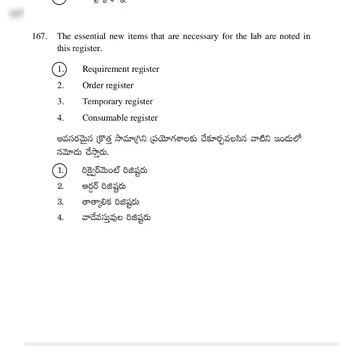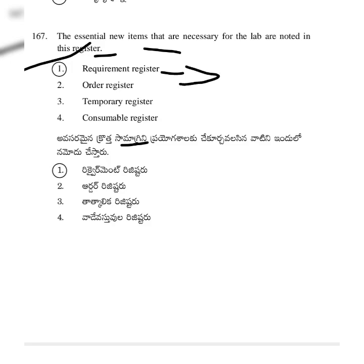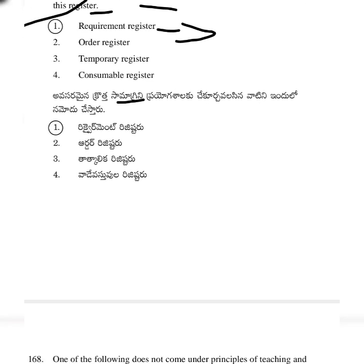The essential new items that are necessary for the lab are noted in this register. We have to do a little bit of work at the beginning of the day. The name of the register is — option 1: Requirement Register.